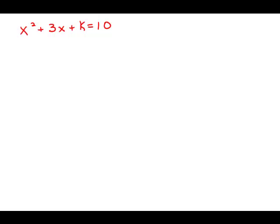If 4 is one solution of the equation x squared plus 3x plus k equals 10, where k is a constant, what is the other solution?